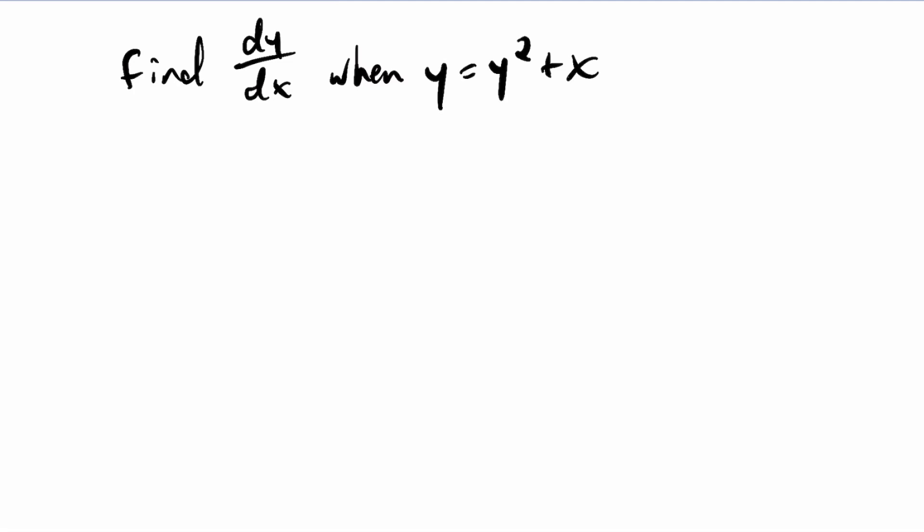So in this video, we're going to find the derivative of y with respect to x based on this equation, y equals y squared plus x. While it is possible to solve for y and get y by itself, that's a bunch of algebra and it's a real pain, so we don't want to do that if we can avoid it. So instead, we'll just use implicit differentiation.